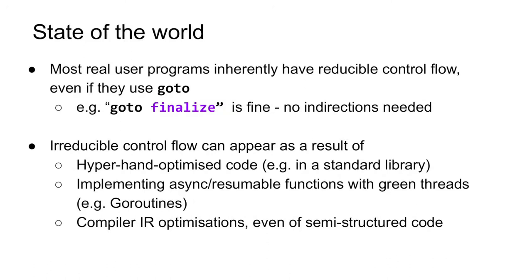However, there are some situations where we might expect to find irreducible control flow — for example, in the hyper-hand optimized code of a standard library or language runtime. We've also been shown a compelling example to do with implementing async functions with green threads, as is currently done in the Go WebAssembly backend. In this scenario, the OS is not responsible for suspending and resuming threads, so the resumption of a suspended function must be handled programmatically through an explicit jump. If a resumption point of the function is in the middle of a loop, this results in irreducible control flow. Finally, and most sneakily, even if a source program has purely reducible control flow, compiler optimizations can transform this control flow to be irreducible — and then at the last leg when lowering to WebAssembly, such control flow must be transformed back. We've observed this happening in LLVM.